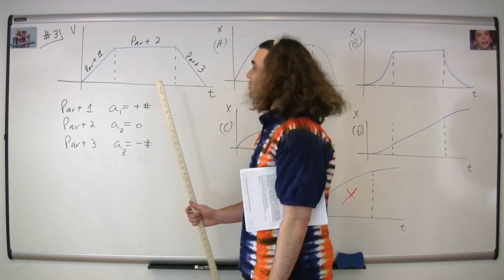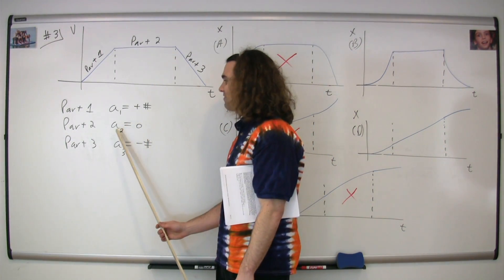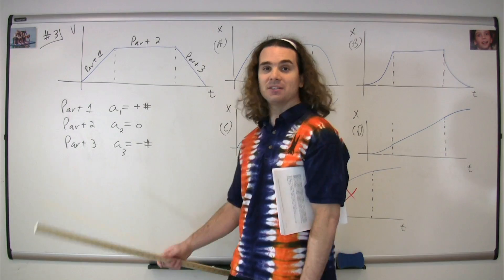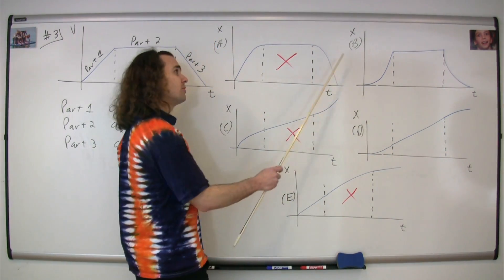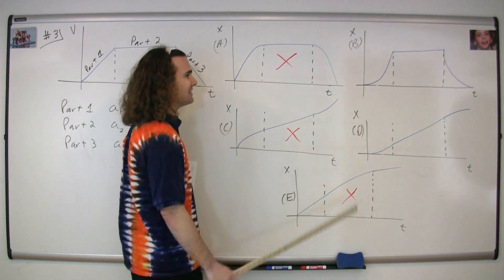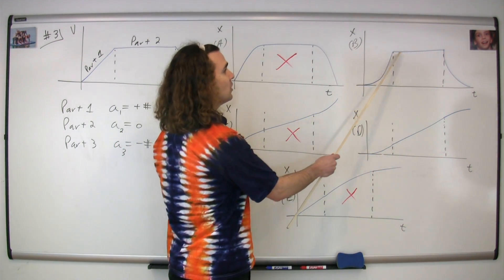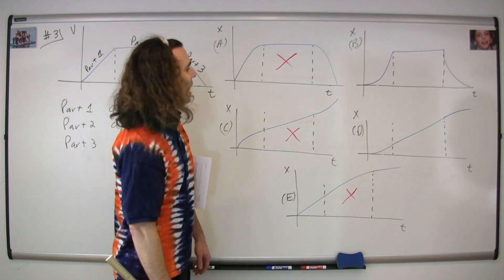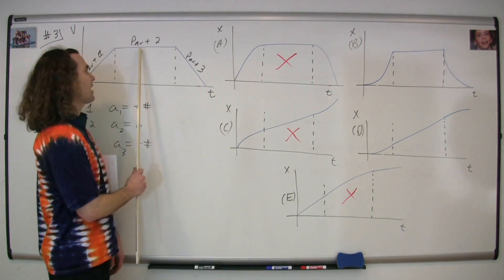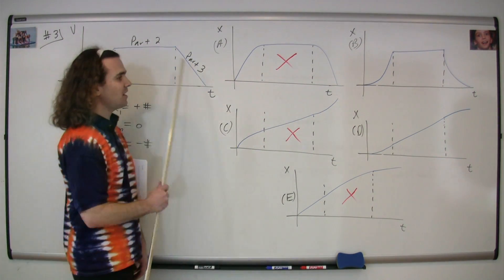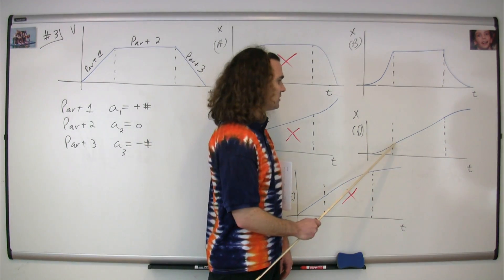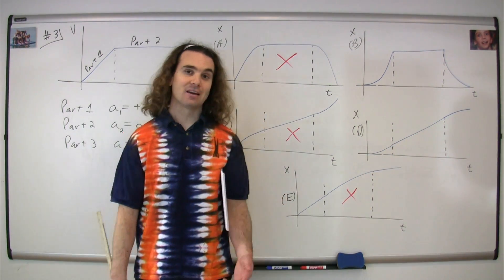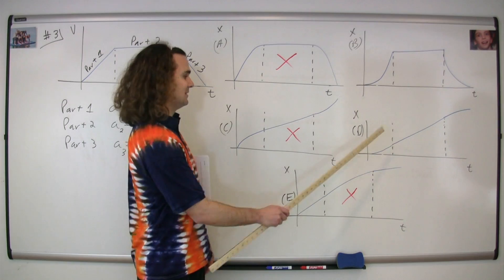Now let's look at part two. In part two, we have an acceleration of zero and a constant positive velocity. The only two that are left are B and D. In B, you can see we do have a constant velocity of zero, and that is not correct — we need a constant positive velocity. Therefore, in D, you can see we do have a constant positive velocity. Therefore, the correct answer is D.